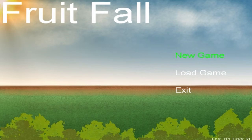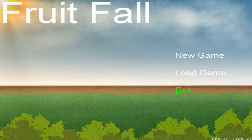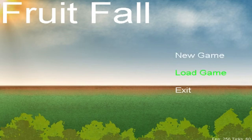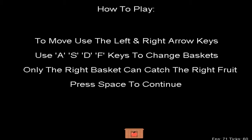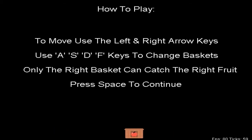I'm going to explain what's going on and what I added. As you can see, this is the menu for Fruit Fall. You have three different options: New Game, Load Game, and Exit. New Game starts a new game, Load Game loads the game — I added a save feature — and Exit closes the game. We want to do New Game. Look at that — I added a tutorial!